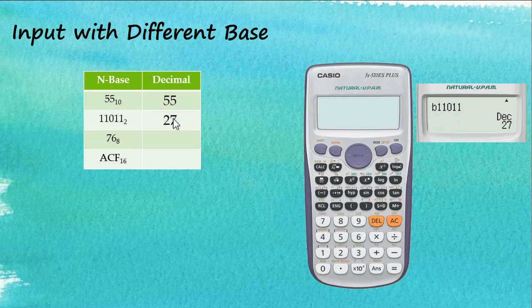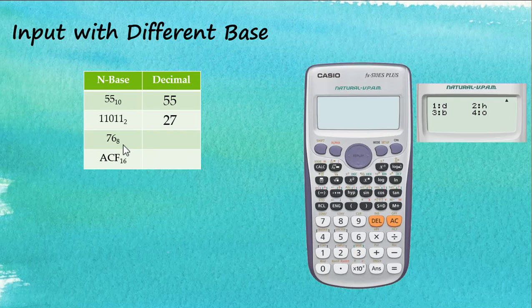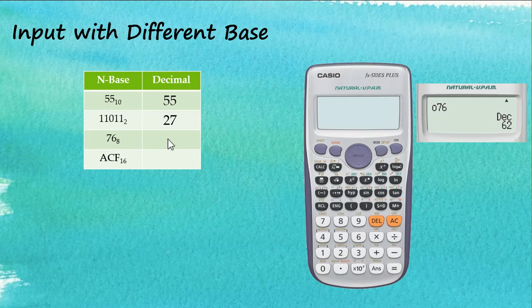The third one is 76 with base 8. So: Shift, Base, Down. This is octal — octal is number 4. Enter the number 76, then press equal. This equals 62 in decimal.